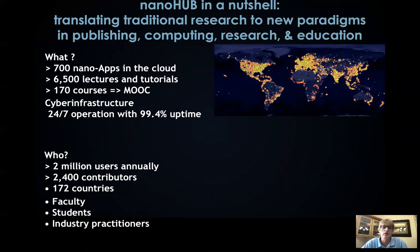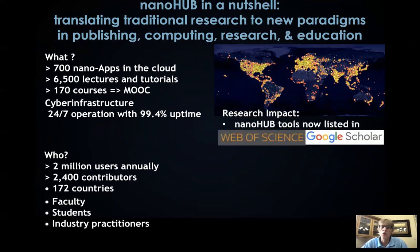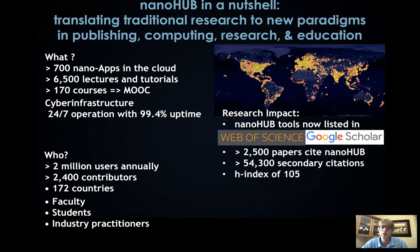We have over 6,500 lectures and tutorials, 170 courses. We are really like a MOOC, and we are a cyber infrastructure with a 99.4% uptime and 24-7 operation. How do we measure impact? We have NanoHub tools that are now listed in the Web of Science and Google Scholar — these are new types of publications. There are 2,500 papers that cite NanoHub in the literature, and these papers generated 54,000 secondary citations, resulting in an H-index of 105.